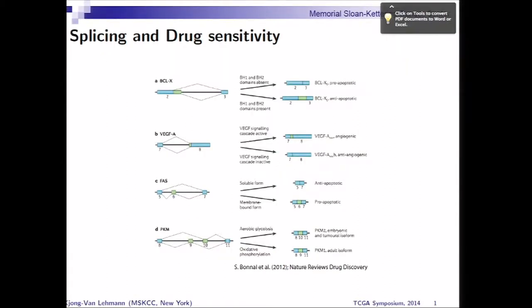Let me give you a little bit of motivation. This is a figure from a Nature Review paper from 2012. It shows you how, if you have alternative splicing, you can have a few genes where you have alternative three prime ends, exon skips, which may change certain domains in the gene and can, in fact, change the function of the gene. You can switch from having pro-apoptotic to anti-apoptotic functions, and you can also change function from being angiogenic to anti-angiogenic. So there's a certain motivation to look into these things as potential targets for cancer treatment.